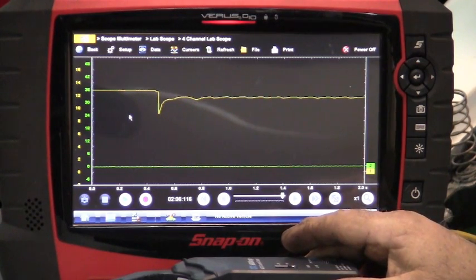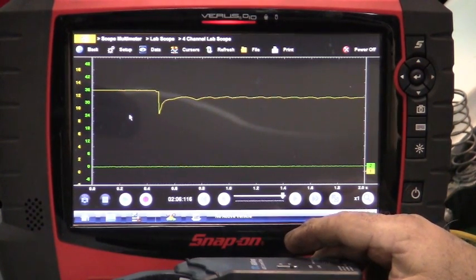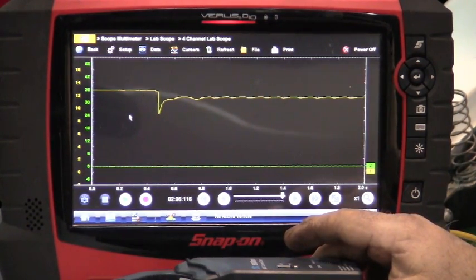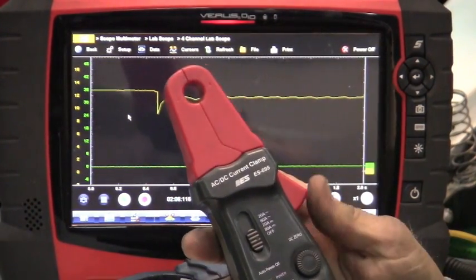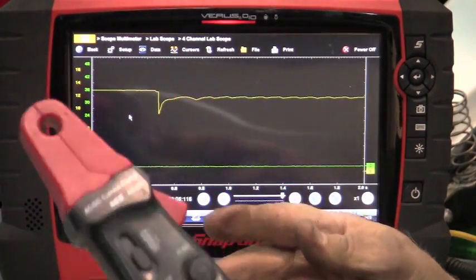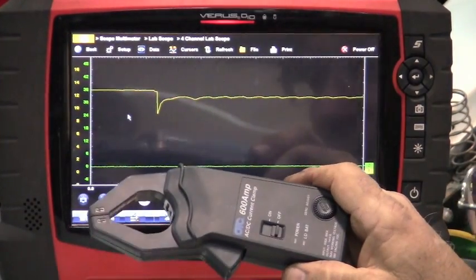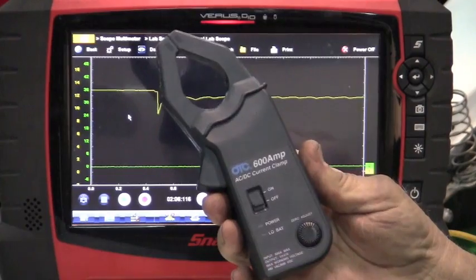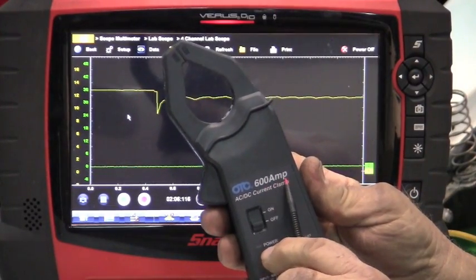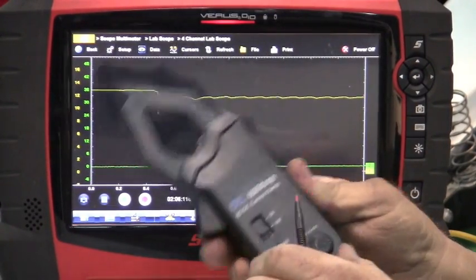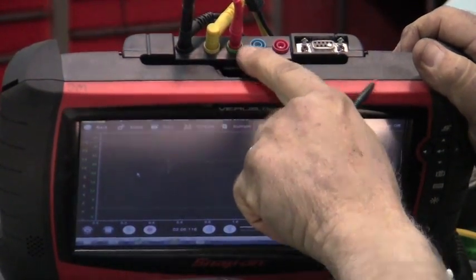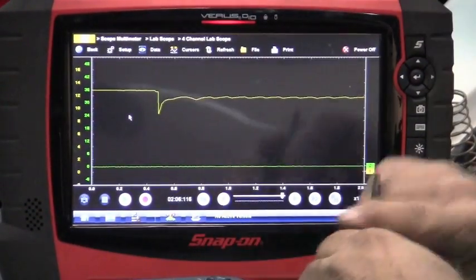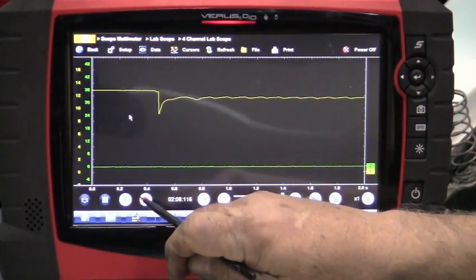Now to look at amps on a starter, you know of course the starter pulls more amps than anything else in the vehicle. So we can't use a low amp clamp like we do for fuel pumps. We have to actually use a higher amp. Now I recommend we get one that is for 600 amps. We plug it into the top, just like everything else on channel two. Now I'm going to take this off of pause here.